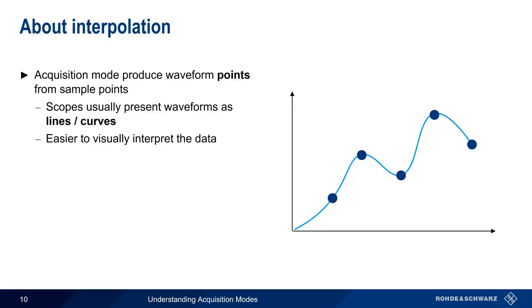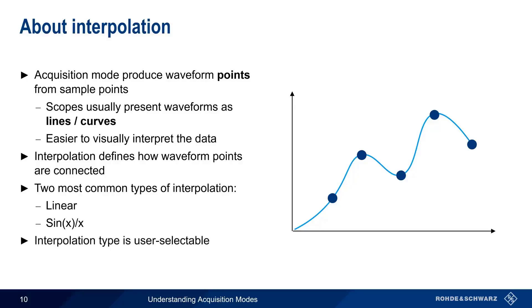In oscilloscopes, interpolation defines how the waveform points are connected. The two most common interpolation types are linear and sine x over x, and we'll go over both of these in more detail in just a moment. Note, too, that the interpolation type is commonly a user selectable or user configurable parameter.